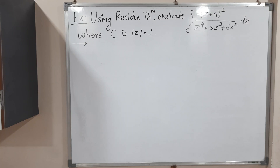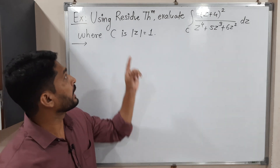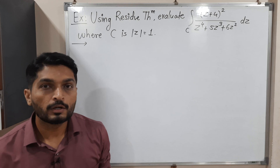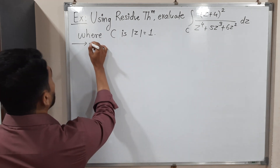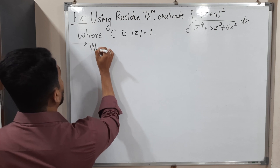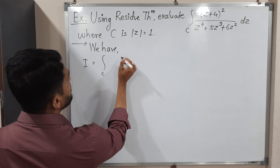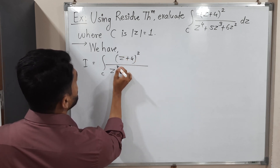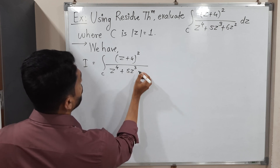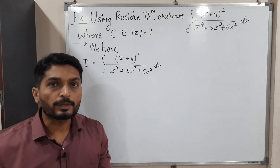In this video we are going to discuss this example. We have this complex integration and we have to find its value with the help of Cauchy's residue theorem. I will call the given integral as I. We have I is equal to the integration over C of (z + 4)² upon z⁴ + 5z³ + 6z² dz.